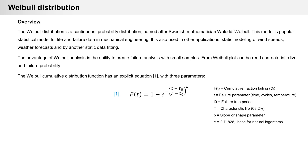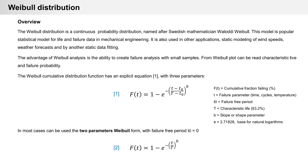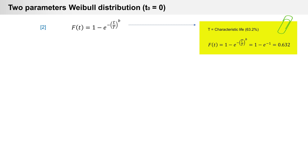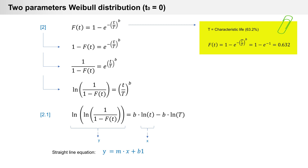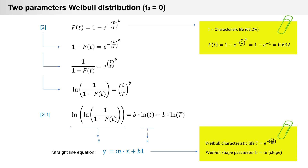In most cases, the two-parameter Weibull form can be used, with failure-free period T₀ equal to zero. We simplify formula 1 to formula 2. When small T equals big T, we have 63.2%. We can then change formula 2 to another form, formula 2.1 — a straight line equation with y on the left side and x with slope B — from which we can calculate characteristic life and shape parameter B.